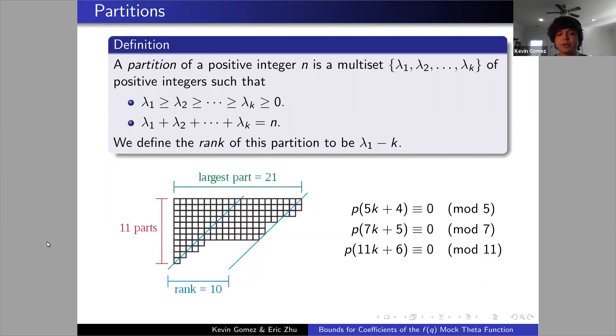Quick refresher: a partition is simply a multi-set of positive integers where all the elements sum to some specified positive integer n. By convention we order these in descending order so we can define the rank of the partition to be the largest part minus its number of parts. You can see visually on a Ferrers diagram how this appears in a more combinatorial way. The rank of the partition was originally devised by Dyson to explain the Ramanujan congruences, the very famous congruences that the partition function demonstrates.